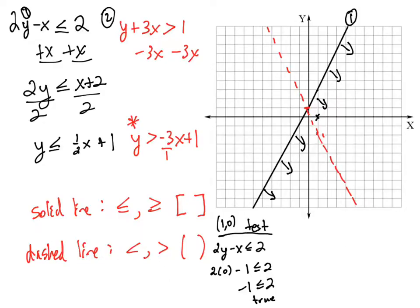Conversely, any point we picked on the other side of the line, if we were to input that into the inequality, it would make the inequality false.